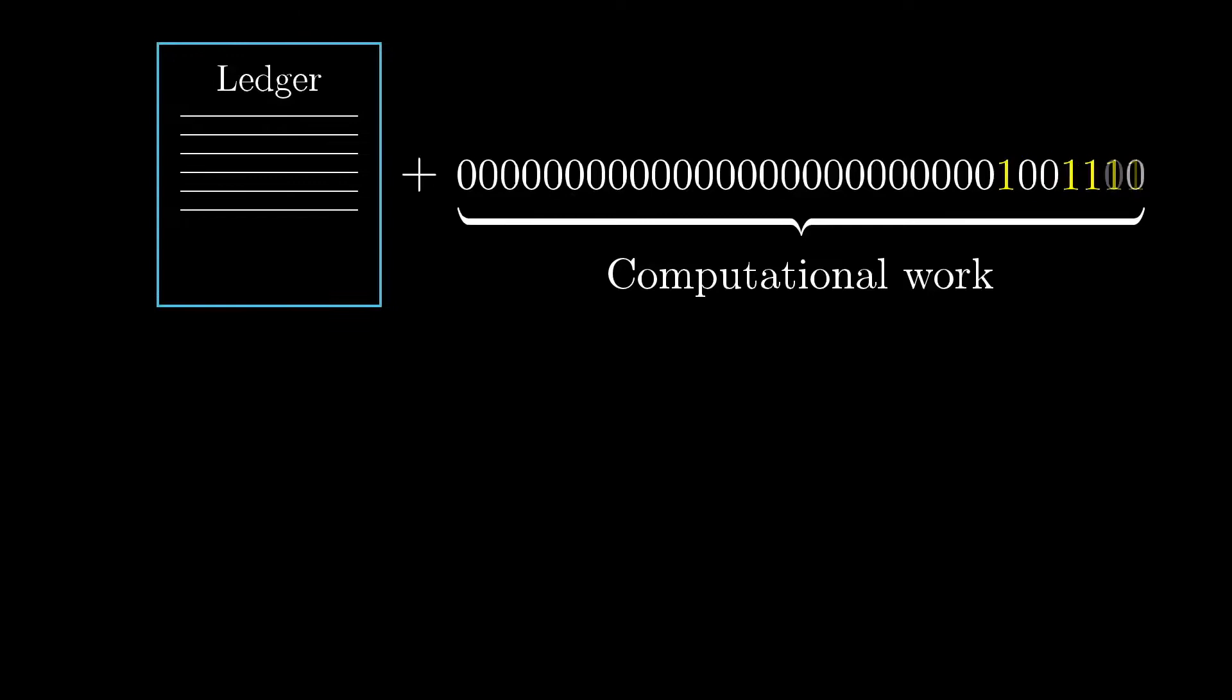At a high level, the solution that Bitcoin offers is to trust whichever ledger has the most computational work put into it. I'll take a moment to explain exactly what that means. It involves this thing called a cryptographic hash function.